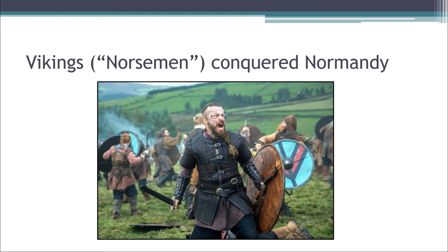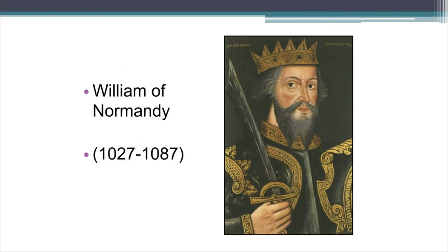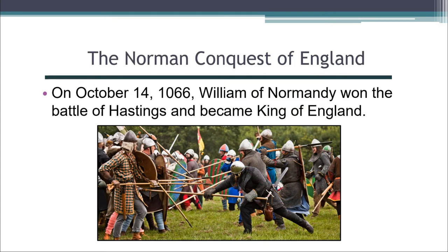William had a plausible claim to the English throne. He said that Edward the Confessor, the previous English king, had designated him as his successor. Edward died in 1066, and the other principal claimant to the throne was Harold Goodwinson. By about 1060, William had established his control over Normandy, and he set his sights on the English crown as well. In October of 1066, William crossed the Channel with his army, won the Battle of Hastings against Harold Goodwinson, and became King of England.